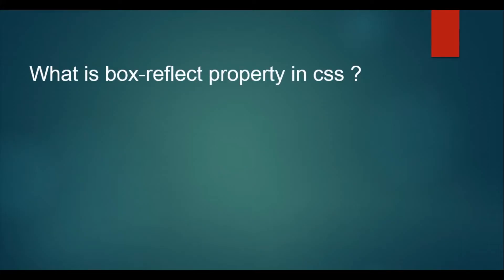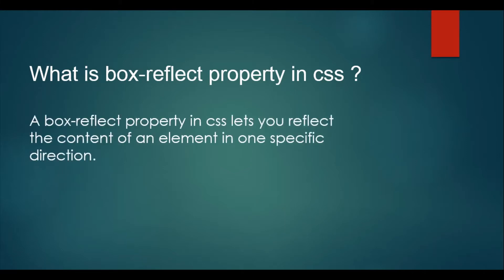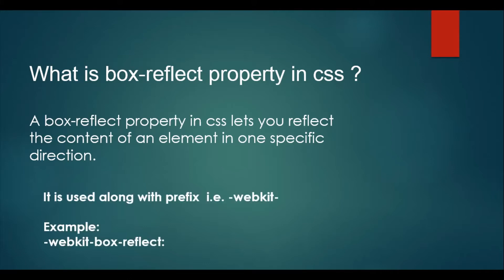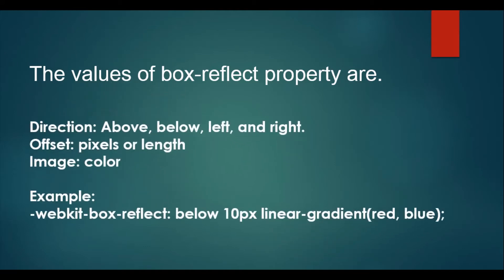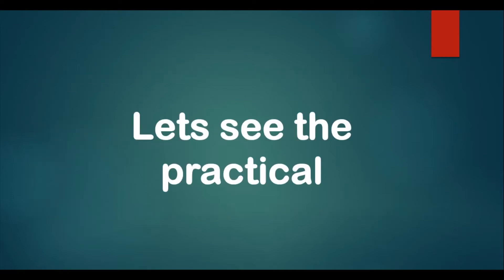The box-reflect property in CSS lets you reflect the content of an element in one specific direction. It is used along with the prefix -webkit-, for example: -webkit-box-reflect. The values of the box-reflect property are: direction (above, below, left, right), offset in pixels or a length, and an image or color. Example: -webkit-box-reflect: below 10px linear-gradient(red, blue). Now let's see the practical demonstration.